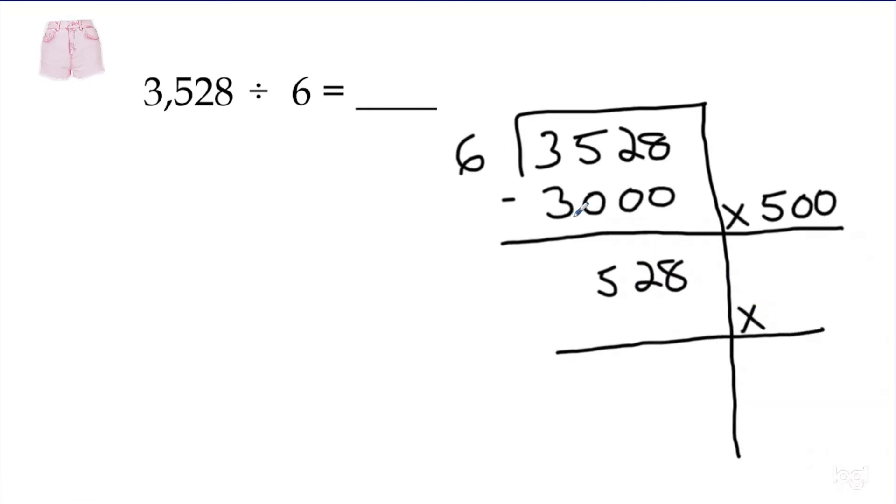I know six times eight is 48. I know six times nine is 54. I'm looking for 52 right here. So I'm going to use six times 80. Because if six times eight is 48, then six times eighty would be 480.